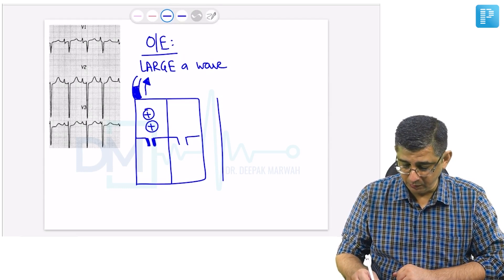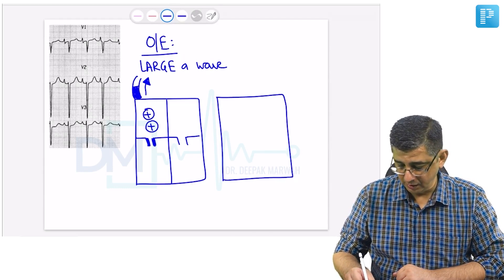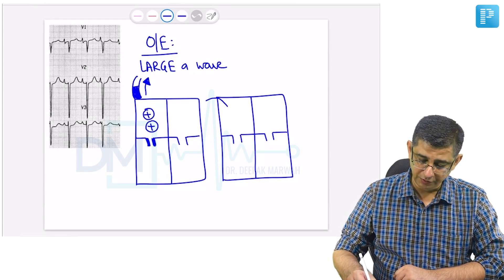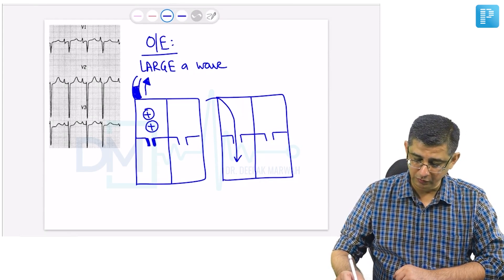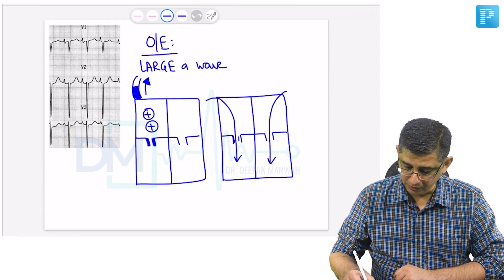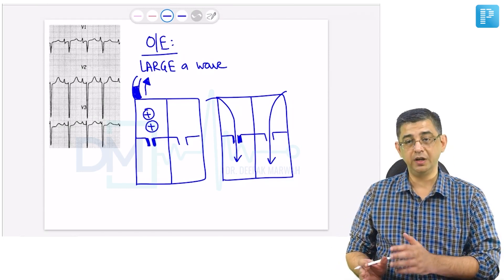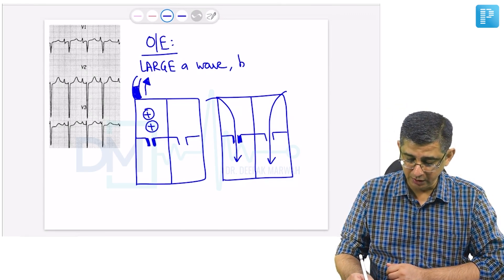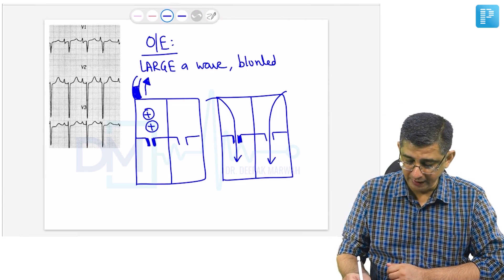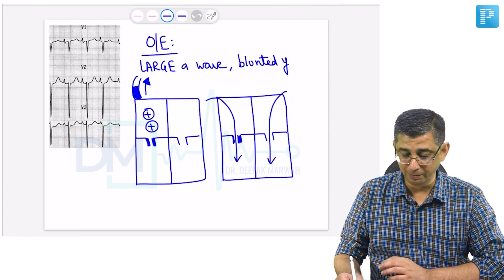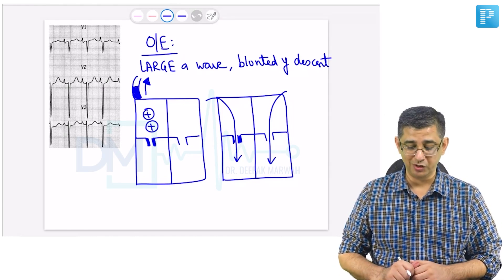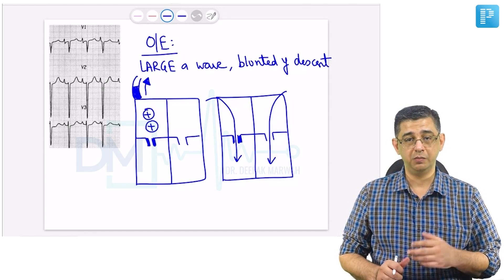The second feature is a blunted Y descent. The Y descent is related to relaxation of the heart during rapid ventricular filling. If the tricuspid opening is relatively narrow, the filling that occurs in the ventricle will be relatively slower. So the two findings in these patients are: large A wave and blunted Y descent — not steep Y descent, mark my words — blunted Y descent. The opposite of steep is a feature seen in patients of tricuspid stenosis.